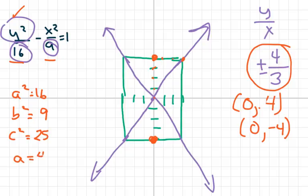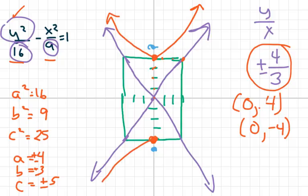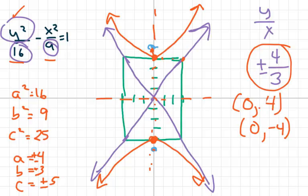The foci are located on the transverse axis. I draw the hyperbola opening up and down from the vertices. The transverse axis is vertical and the conjugate axis is the x-axis. The coordinates of the foci are (0, 5) and (0, −5).